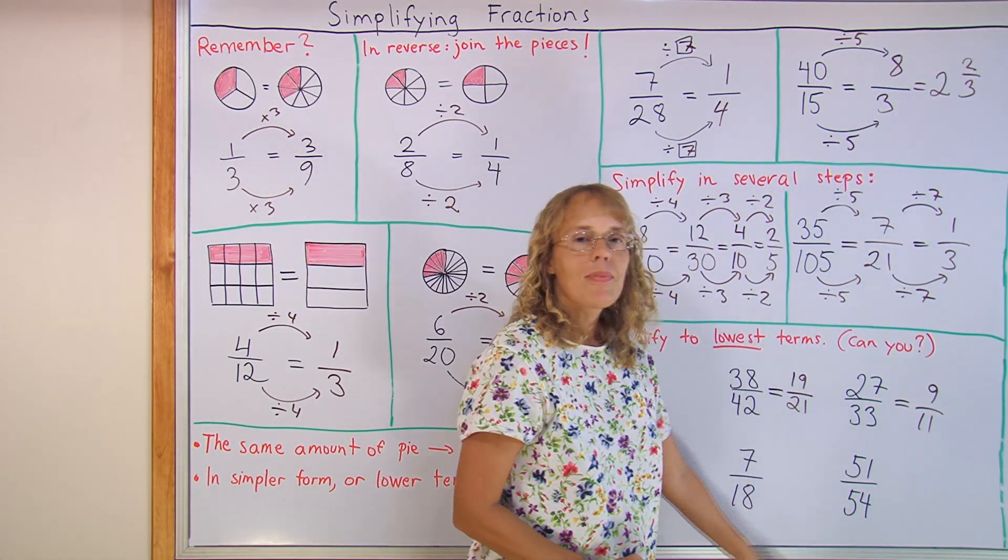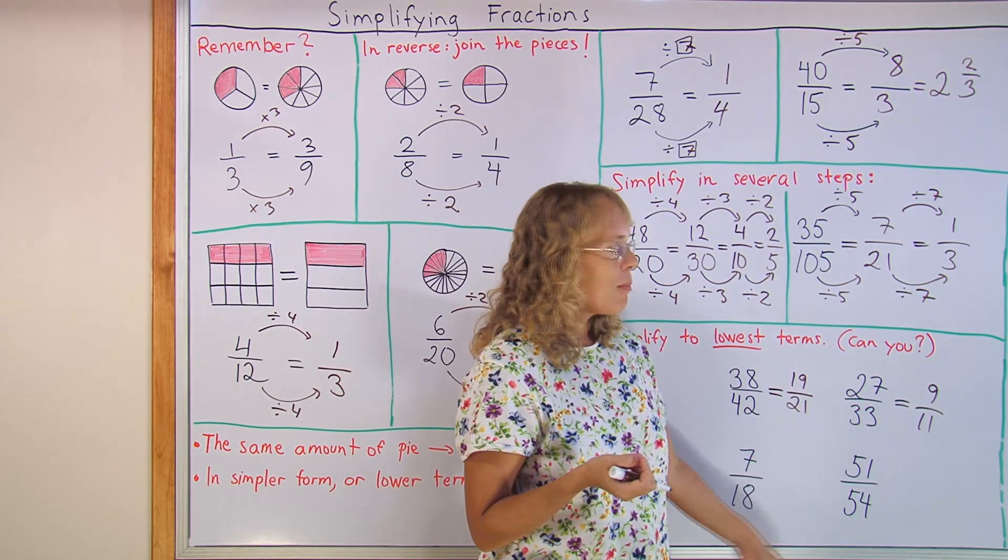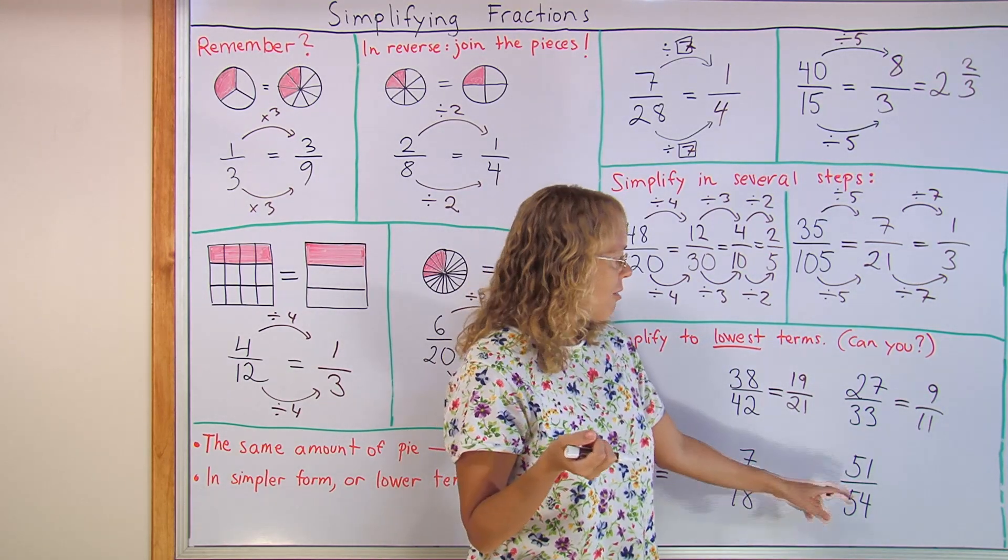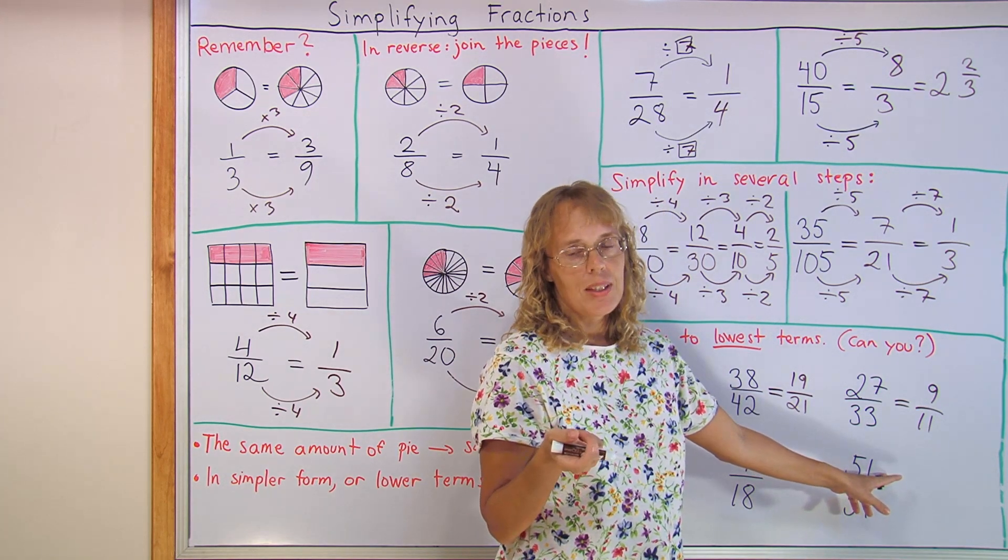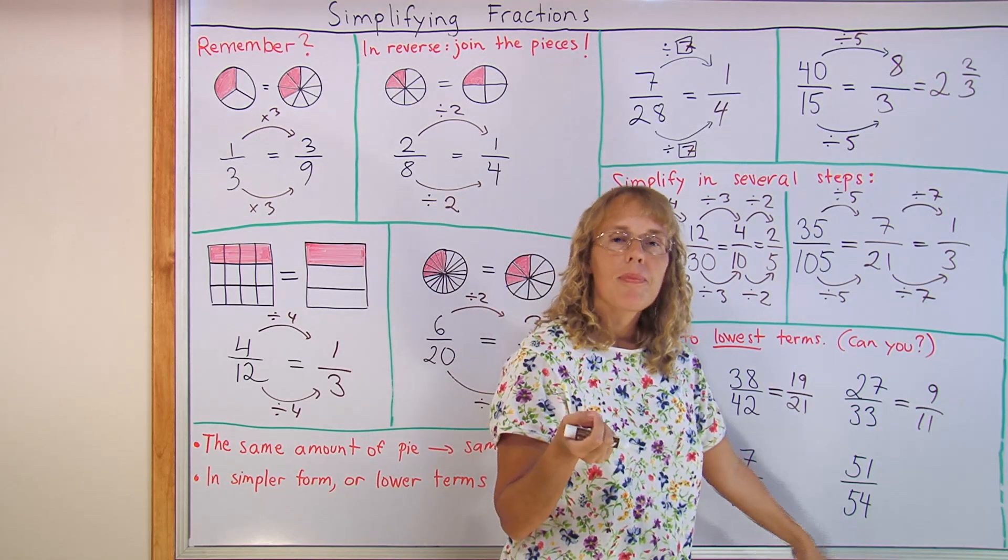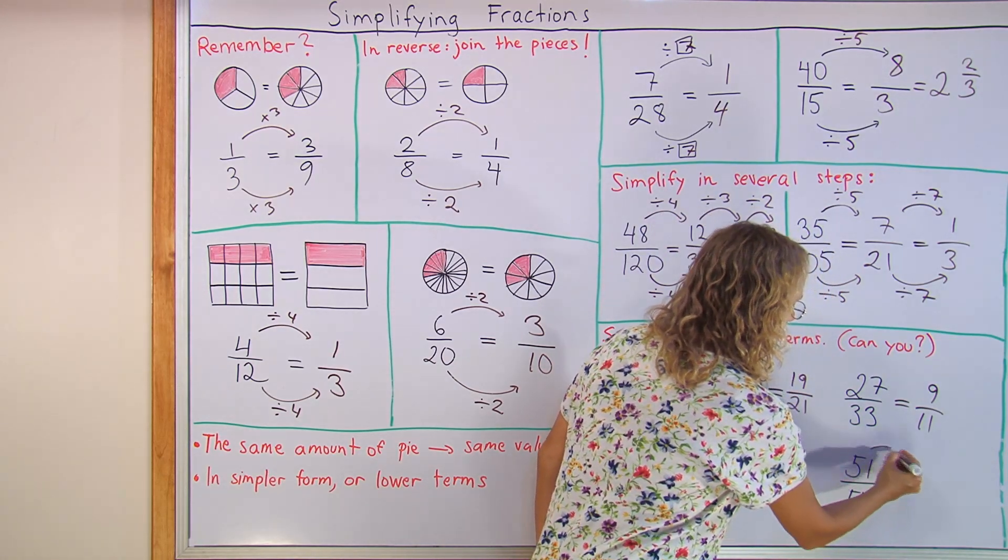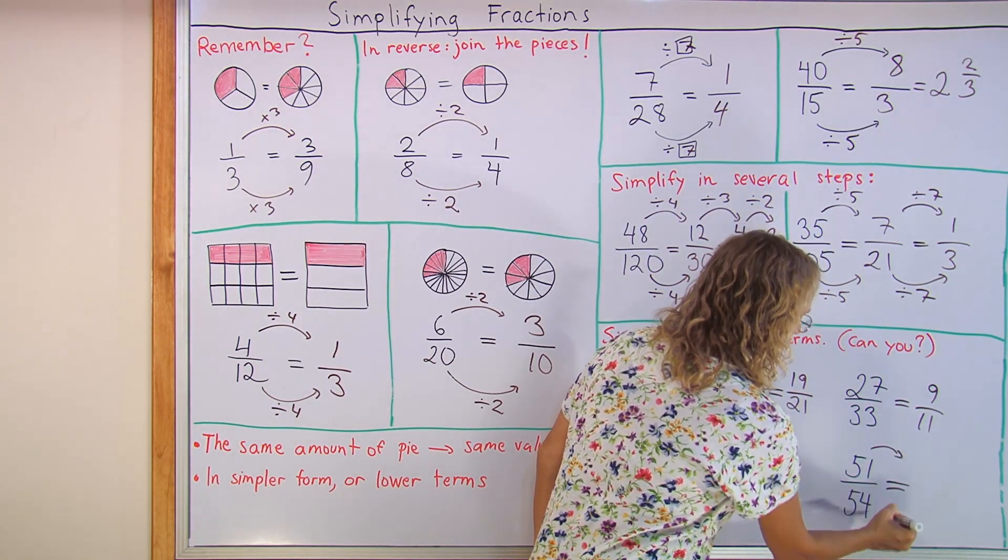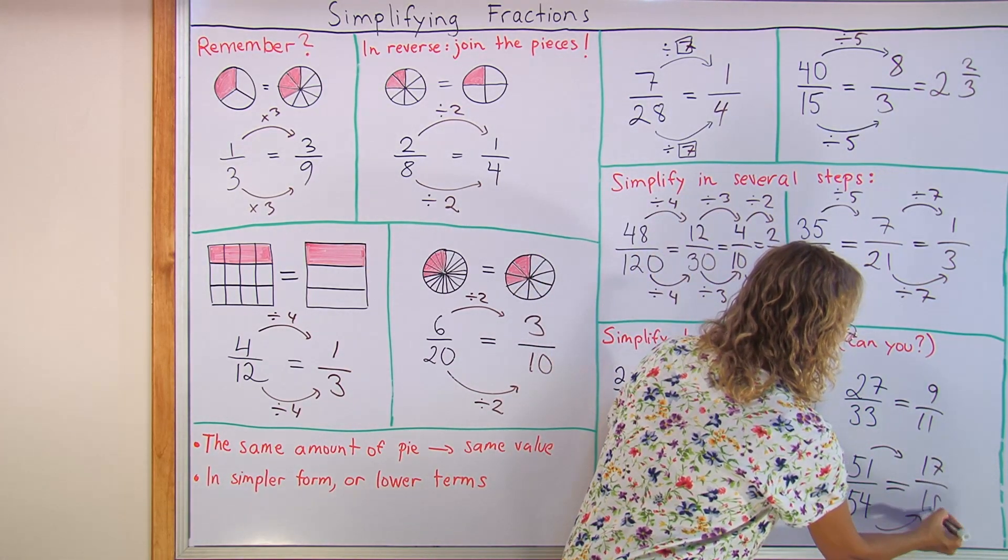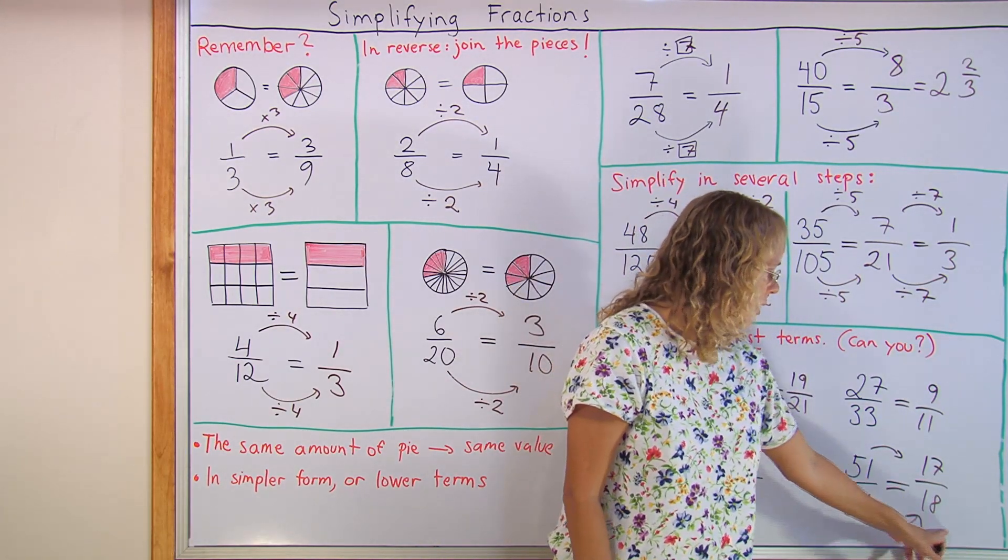How about this one? Here, the numbers are a little bigger. You might need to use your knowledge of divisibility tests. If you remember the divisibility test for three. If I add five plus one equals six. Six is divisible by three and so is fifty-one. Five plus four is nine. Nine is divisible by three, so this number is too. I can simplify. I would divide by three. Fifty-one divided by three is seventeen and then this is eighteen. And now it doesn't simplify any further. So, this is now in its lowest terms.